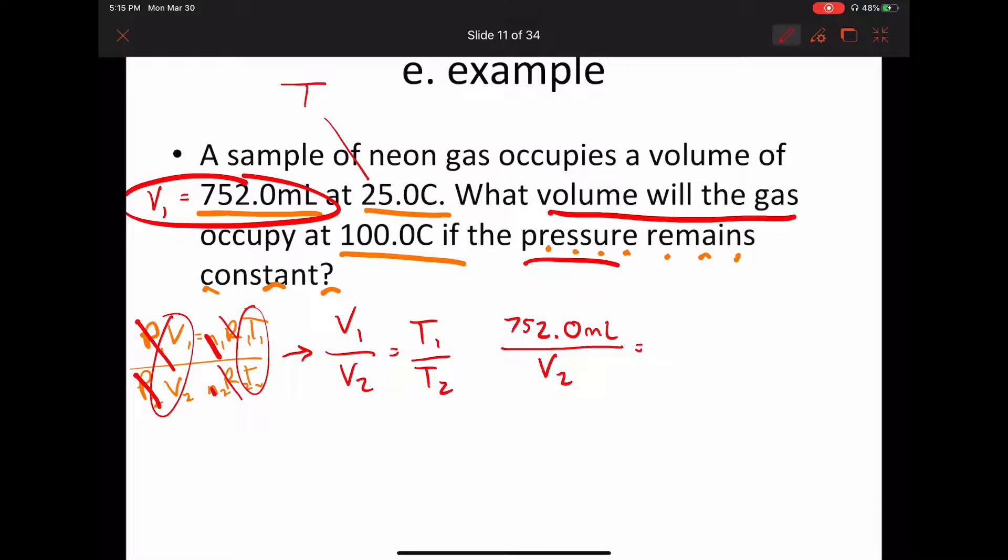T1 is 25, right? T1, 25, but we have to add 273 plus 25. That's going to give us 298. So we get 298 for that one, and that's T1, so that goes on top. So that's just plus 273, so it's going to be 373 on the bottom.